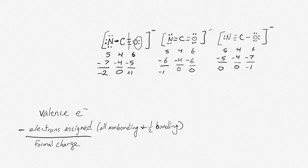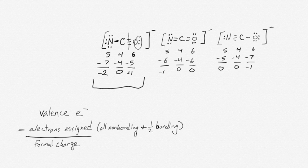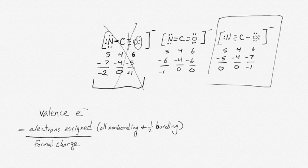The way to decide which of these is the best structure is by looking at the one that minimizes the formal charges and puts any negative charge on the most electronegative atom. The first example is out — it has a minus two and a plus one, while the other examples only have zeros or minus ones. The other two examples have the same formal charges — zeros and minus ones — so they've been minimized, but one is better than the other. The final example has the negative charge on the oxygen rather than the nitrogen, and since oxygen is more electronegative than nitrogen, it should have the negative charge. Therefore, while all three are valid Lewis structures, the one that contributes most is the third one.